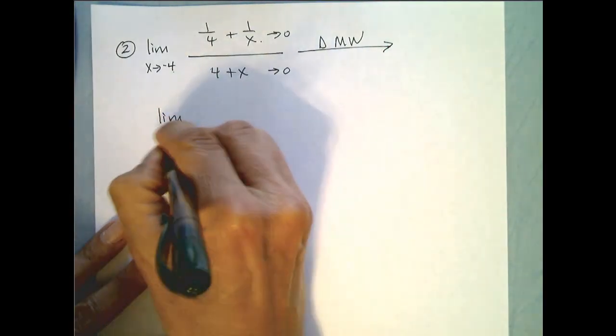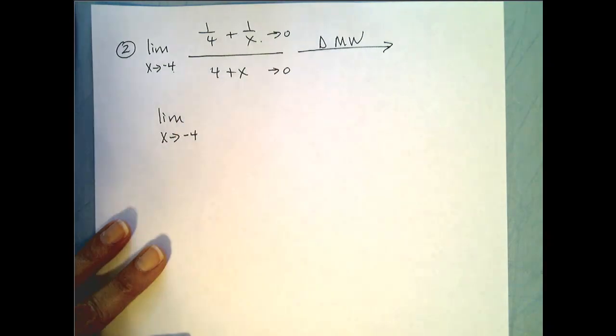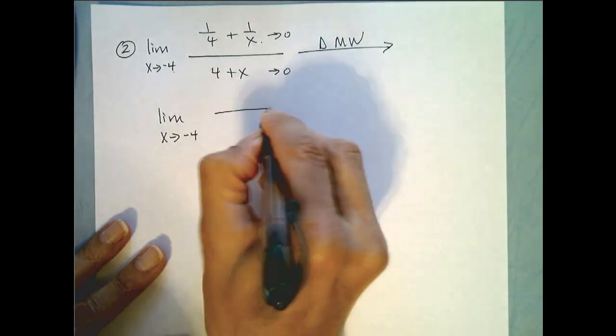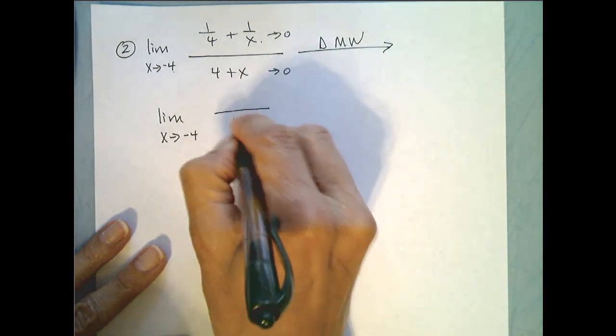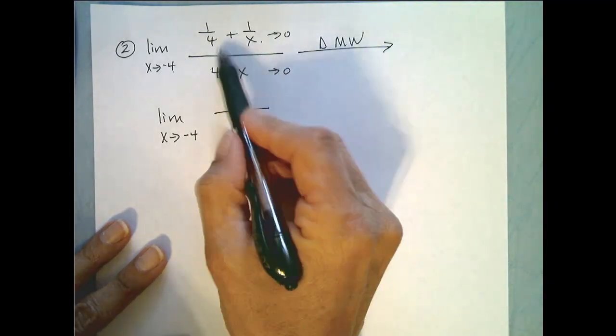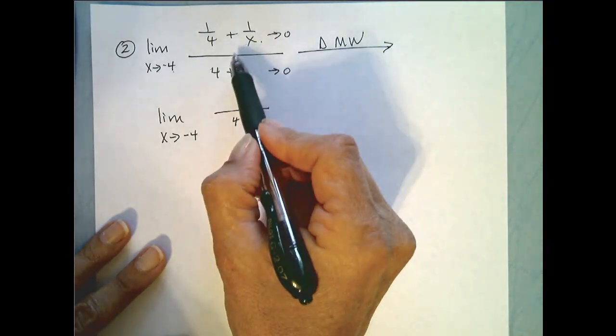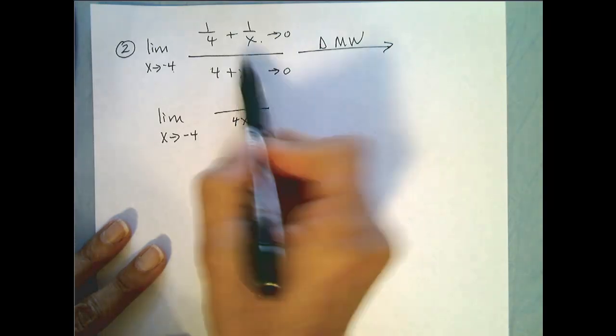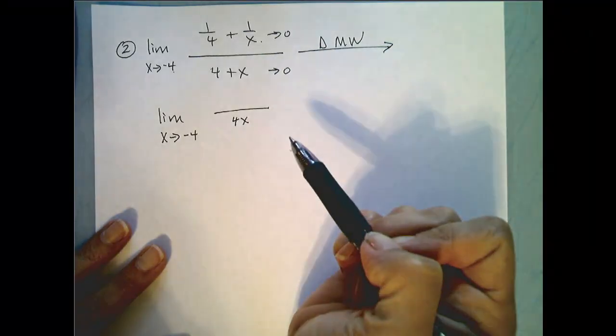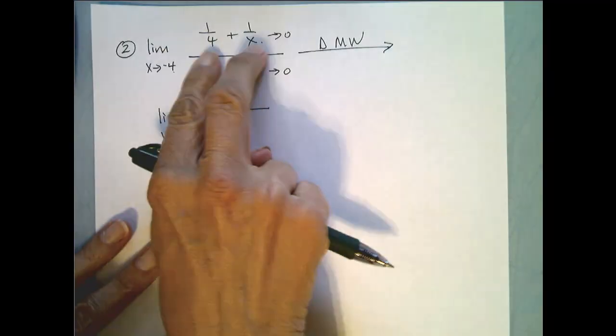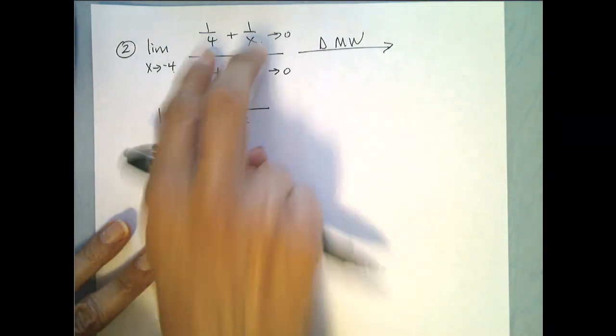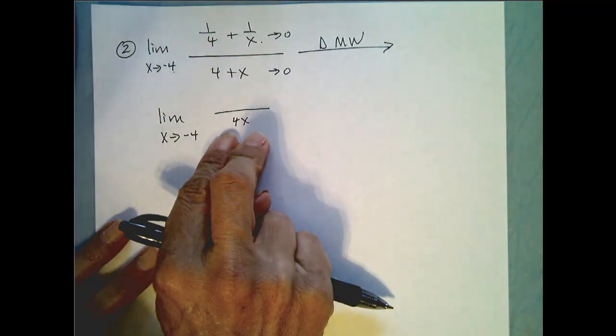So we look at the limit as x goes to negative 4 and I find a common denominator is 4 times x. It is so tempting to make our denominator up here 4 plus x because it looks like this one and this plus is leading us down that path. But remember we are taking the factors of our denominators and combining them which means we're going to have to multiply them.